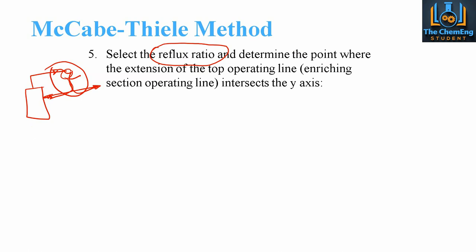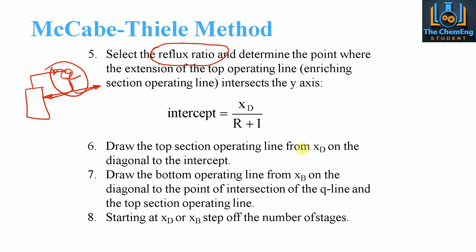Our y-intercept is given by the equation: intercept equals xd divided by (r plus 1), where r is the reflux ratio. We draw the top section operating line from the composition on the diagonal to the intercept point. We then draw the bottom operating line from the bottom stream composition on the diagonal to the point of intersection of the Q line and the top section operating line. We can start from either xd or xb and step off the number of stages.